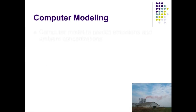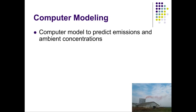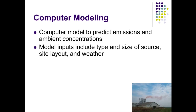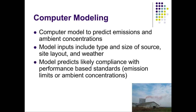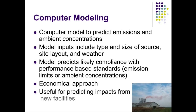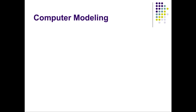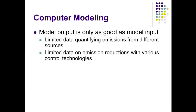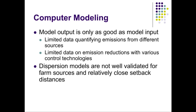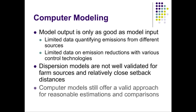Computer modeling offers a third regulatory approach with distinct advantages over prescriptive and performance standards. Information specific to a particular farm layout or design, along with historic weather data, can be used to predict downwind concentrations and document the likelihood of compliance with performance-based standards. It's also cheaper than monitoring and useful when new facilities are proposed. Unfortunately, computer models are only as good as available information, and accurate emission data for many source types is lacking. Most models have not been well validated for predicting downwind concentrations at distances similar to property lines, though even with limited data they provide reasonable estimates of site emissions and their downwind impacts.